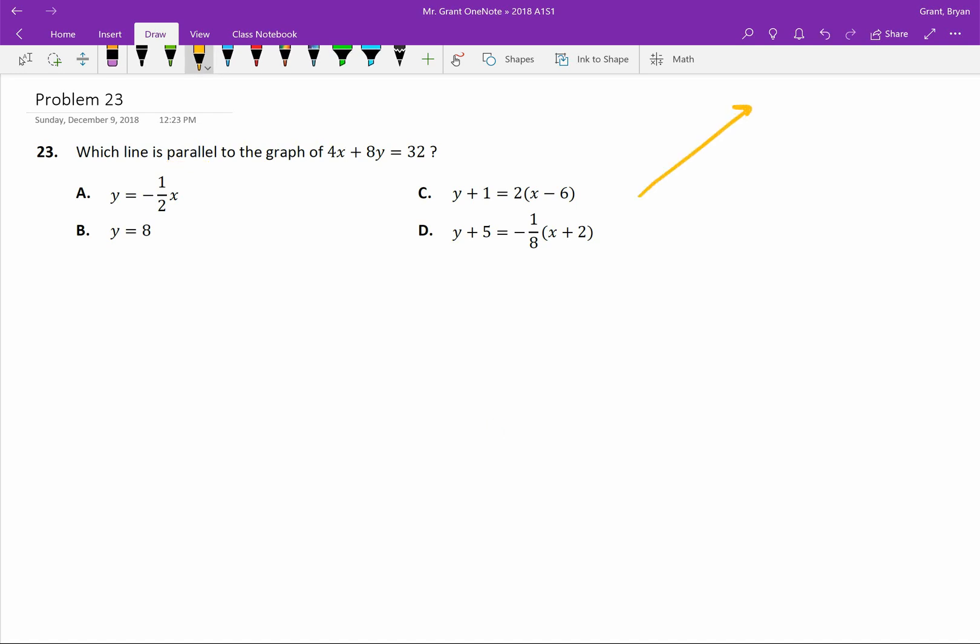If you picture two parallel lines, maybe I'll put one here and then I'll sketch one that is somewhat parallel to the other. The reason that they're parallel is because they're both sloped in the exact same direction. They're both pointing upwards at the same angle and they're never gonna cross each other. And the reason they're never gonna cross each other is because of that slope.